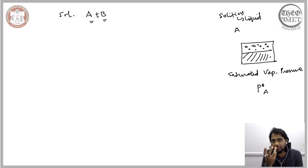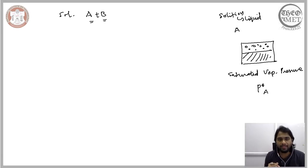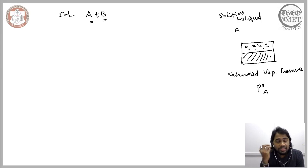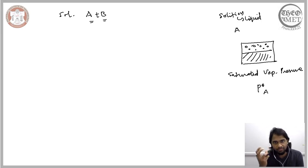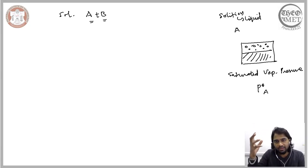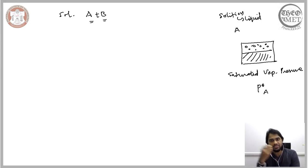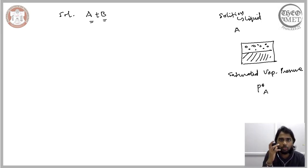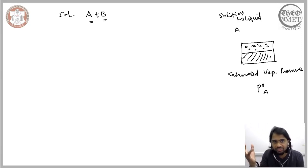For instance, the rate of condensation depends on the number of components present in the vapor phase — more atoms in the vapor phase means more interactions with the liquid, increasing the condensation rate. Therefore, we can equate the rate of condensation to that of evaporation, assuming the system is in dynamic equilibrium.